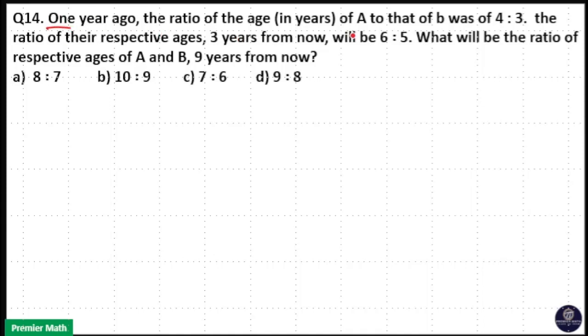One year ago, the ratio of age of A to that of B was 4 is to 3. The ratio of their respective ages 3 years from now will be 6 is to 5. What will be the ratio of respective ages of A and B 9 years from now?